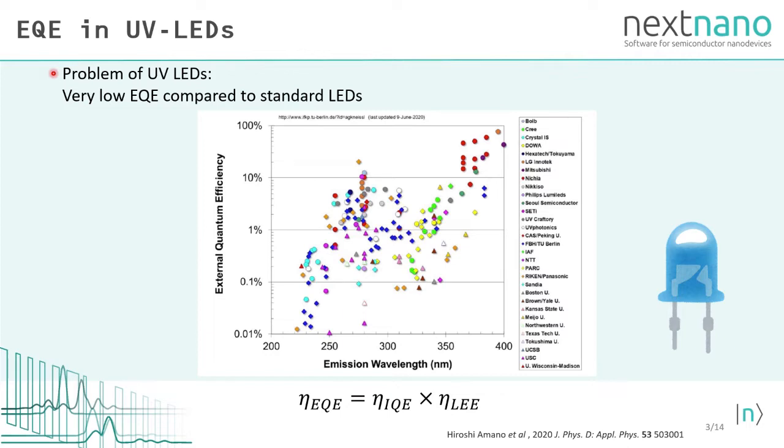Current UV LEDs suffer from very low external quantum efficiency compared to standard LEDs. It is especially low, like less than 1% for shorter wavelength, although they have the high potential to be used in disinfection applications, for instance.